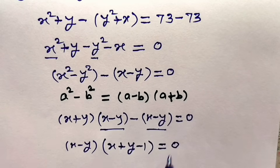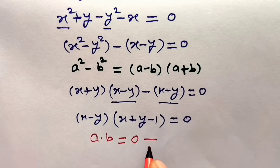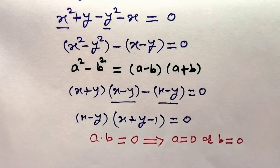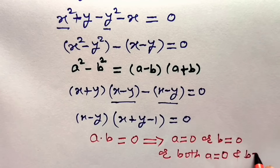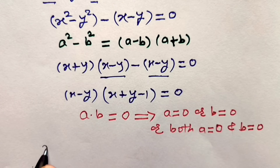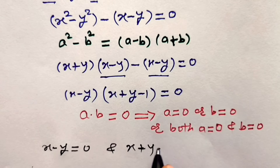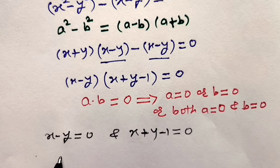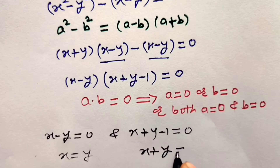Since we know that a into b equals 0 implies either a equals 0, or b equals 0, or both a and b equal 0, we can write: either x minus y is equal to 0, giving x equals y, or x plus y minus 1 is equal to 0, giving x plus y is equal to 1.